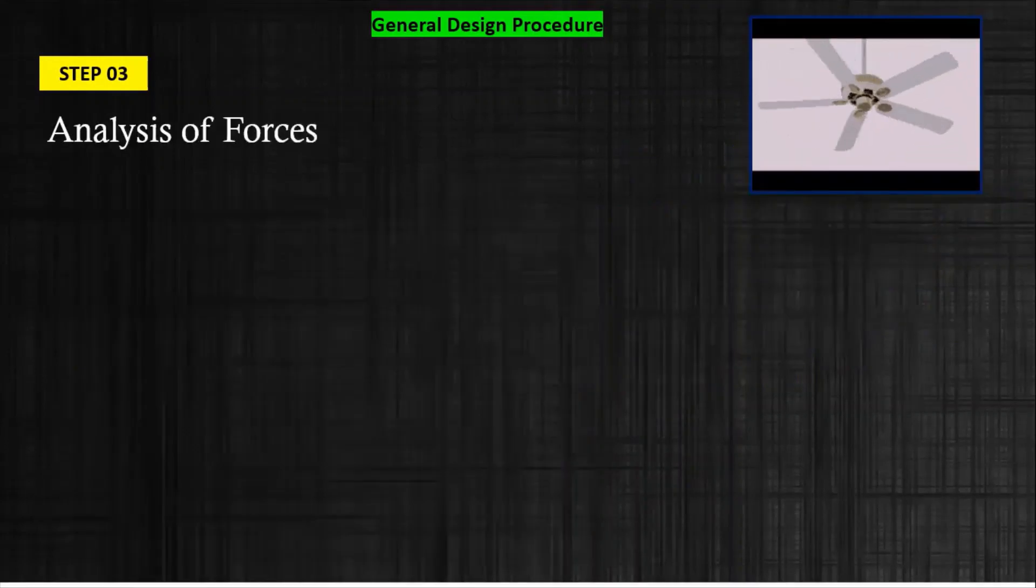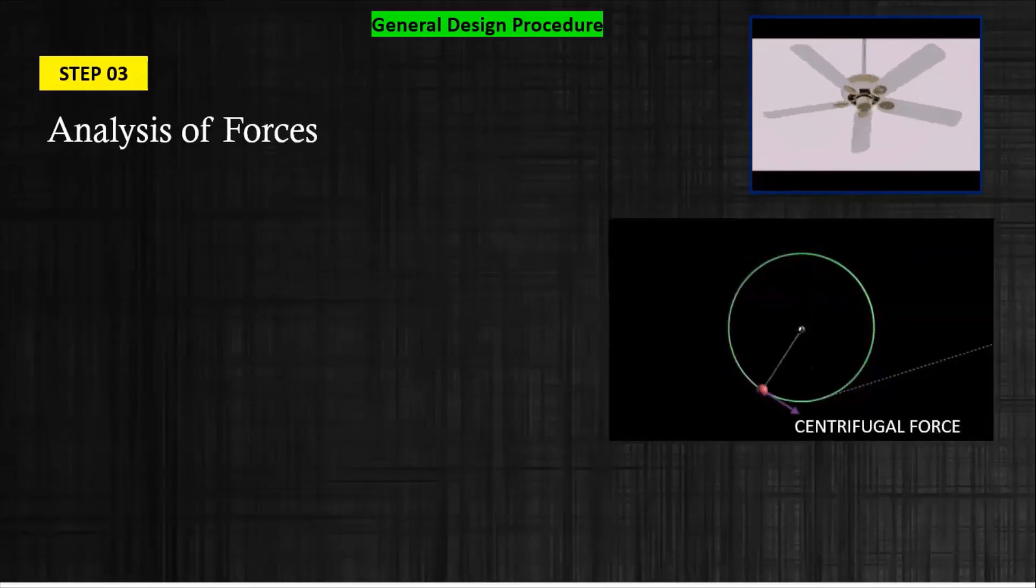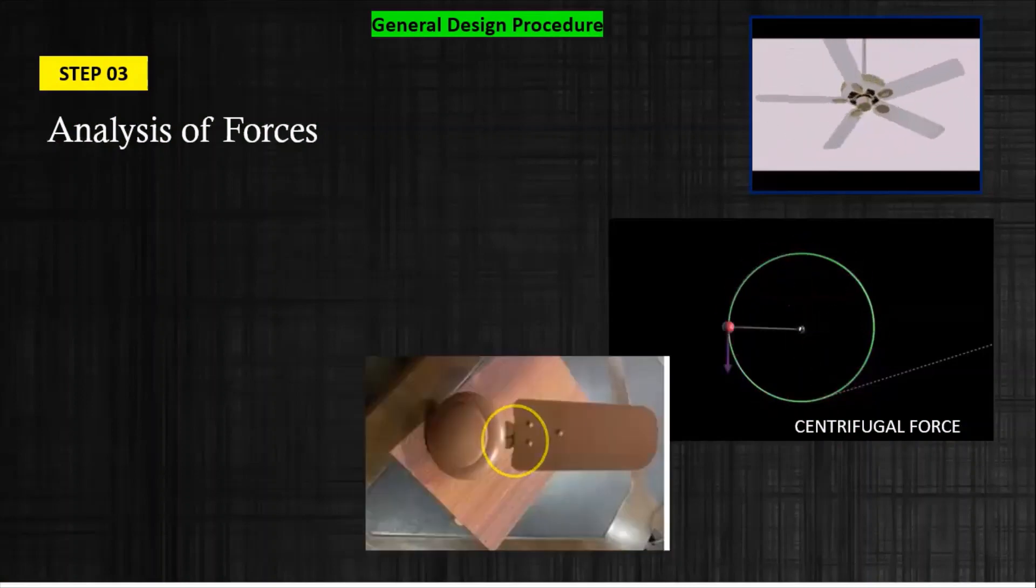The third step is the analysis of forces. Why are we doing the analysis of forces? So that we come to know which part is weak, strong, or we need some modification. When the rotor of the fan rotates, the centrifugal force will act on the blade. If you see this fan, which is the weakest portion here? This is the neck. Due to the centrifugal force, this part will get break. There may be a possibility, so we have to take care.